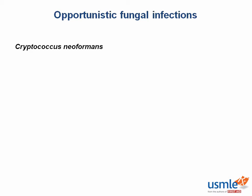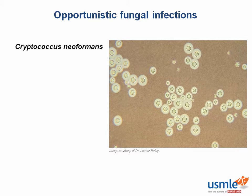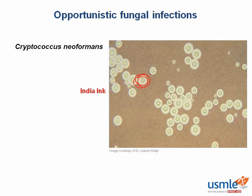Cryptococcus neoformans has a very characteristic appearance on stain. It is usually found in narrow-based budding yeast form. The specific stain used to identify it is the India ink stain. If you ever see the words 'India ink' on your test, think of Cryptococcus. Cryptococcus stains well with India ink because of its thick polysaccharide capsule.